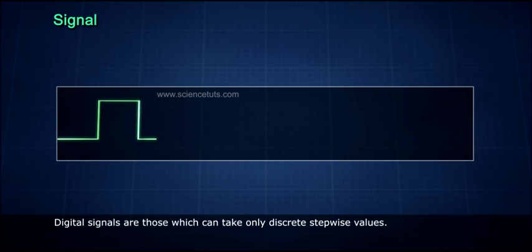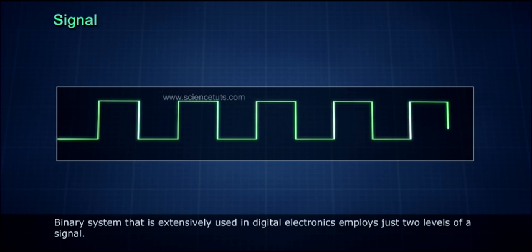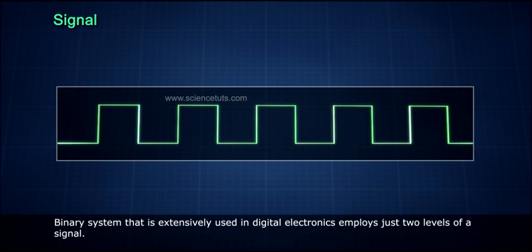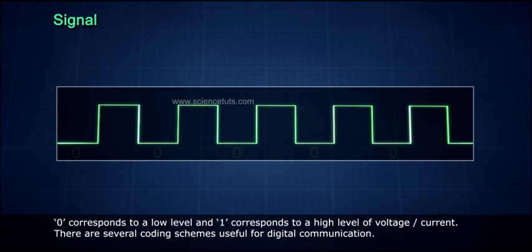Digital signals are those which can take only discrete stepwise values. Binary system that is extensively used in digital electronics employs just two levels of a signal. Zero corresponds to a low level and one corresponds to a high level of voltage or current.